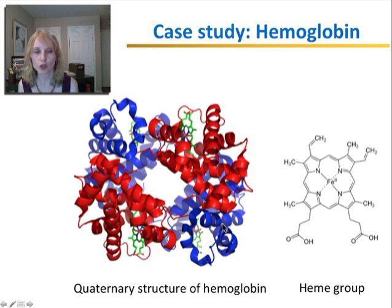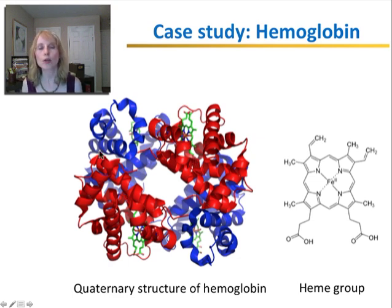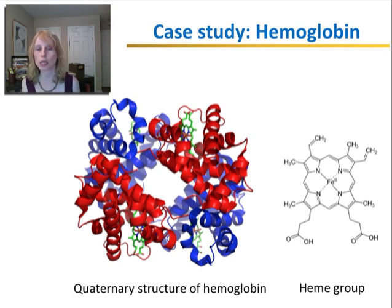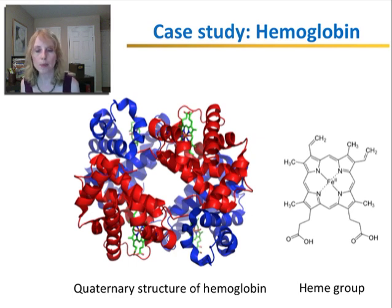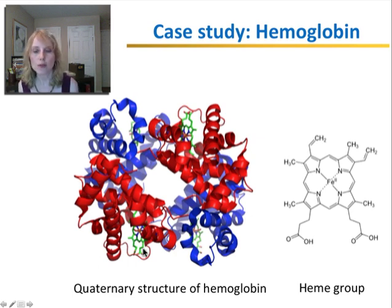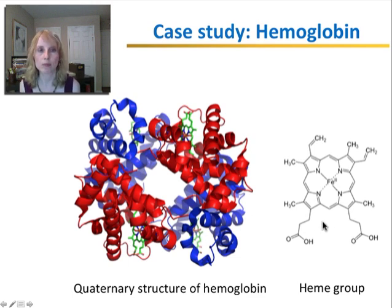Hemoglobin is actually made up of four polypeptides — one, two, three, four. It has four polypeptide chains, and each one of them has another molecule called the heme group.